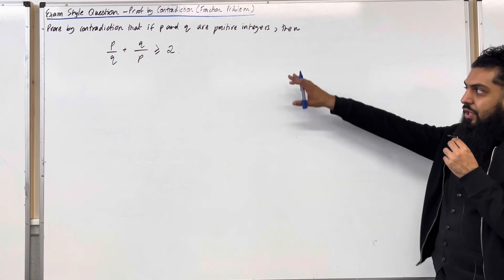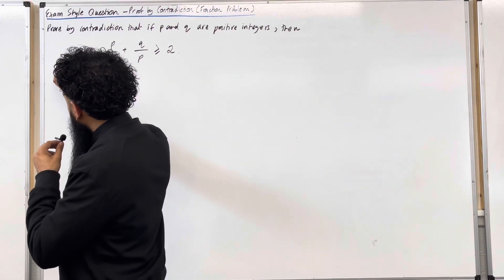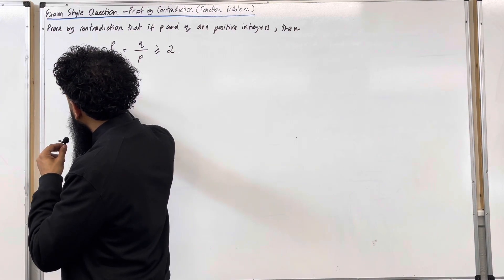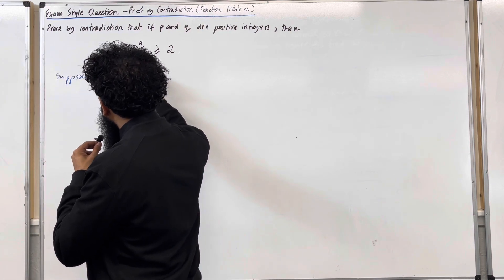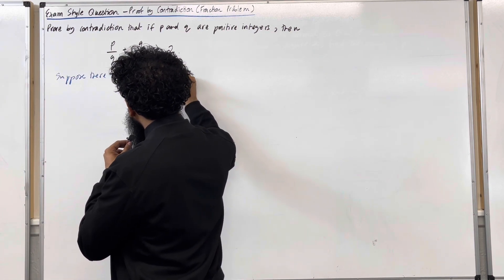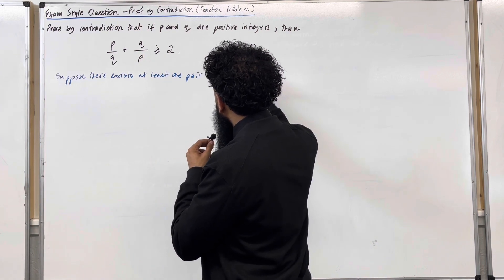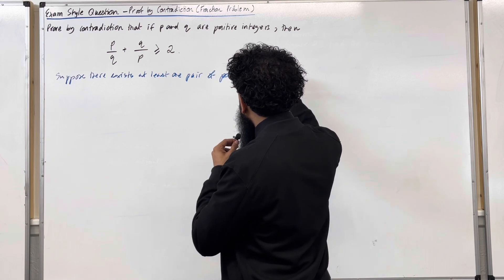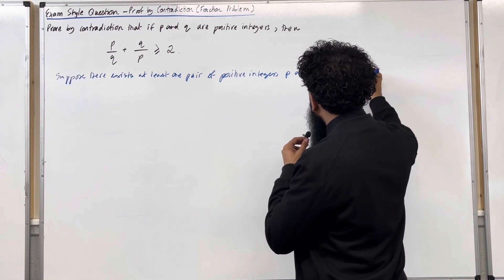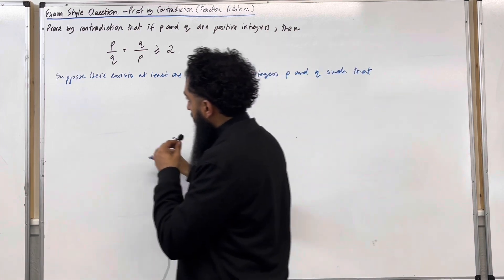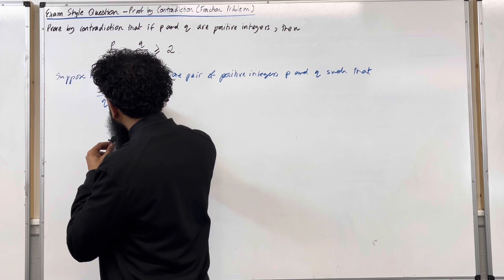The first step is to write down the negation of this statement. Here is the negation. Suppose there exists at least one pair of positive integers p and q such that p over q plus q over p is less than 2.